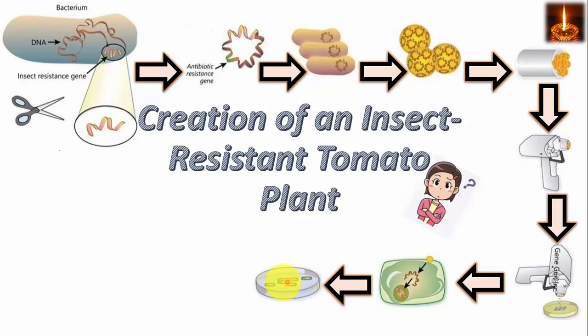In the next step, the cells are plated onto a selective antibiotic media. Here, only cells that have incorporated the vector will survive, and other non-recombinant cells will be screened out.